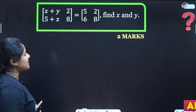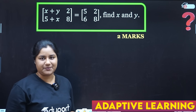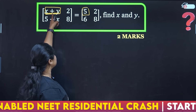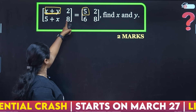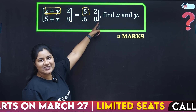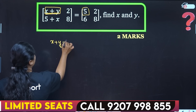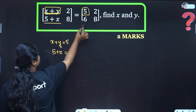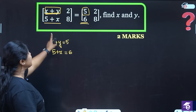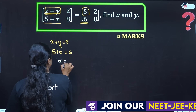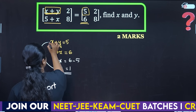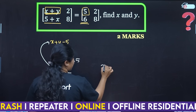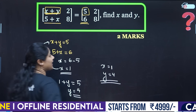Now, if you have two matrices equal, say with elements A11, you can write X and Y. When two matrices are equal, the elements at corresponding positions are equal. So the 1,1 position gives x plus y equals 5, and the 2,2 position gives 5 plus x equals 6. So x equals 6 minus 5, which means x equals 1. Then 1 plus y equals 5, so y equals 4. Therefore x equals 1 and y equals 4 — easy two-mark question.